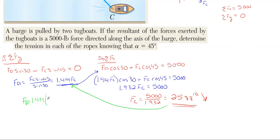So F_A is 1.414 times the 2,588, and that gives us an F_A value of 3,659.4 pounds in that general up-right direction.